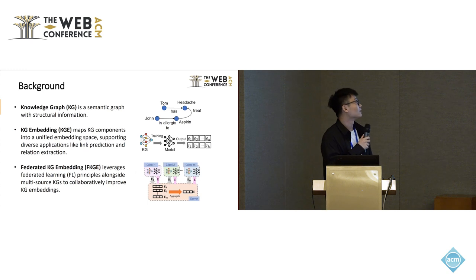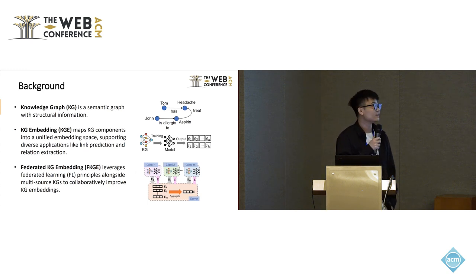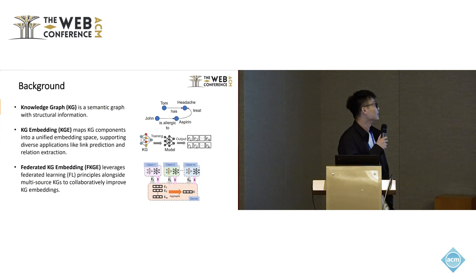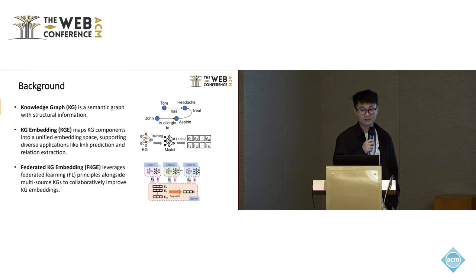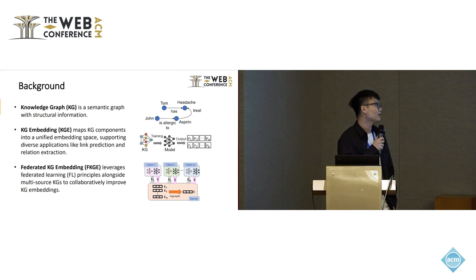A knowledge graph is a semantic graph with structural information. It describes real world entities and their relationships. Knowledge Graph Embedding maps KG components into a unified embedding space, supporting diverse applications like link prediction and relation extraction. An emerging research area is Federated Knowledge Graph Embedding, which leverages federated learning principles alongside multi-source KGs to collaboratively improve KG embeddings. It usually has multiple clients that hold different KGs and one server that aggregates their embeddings.